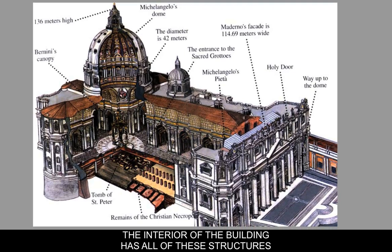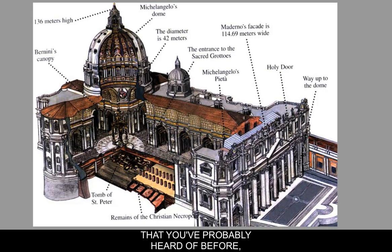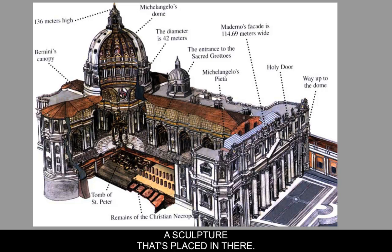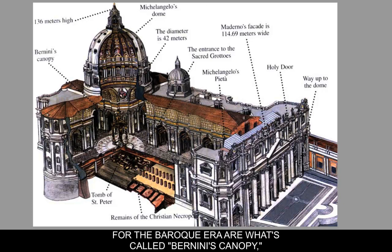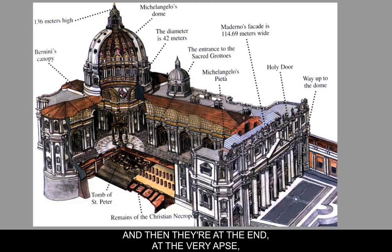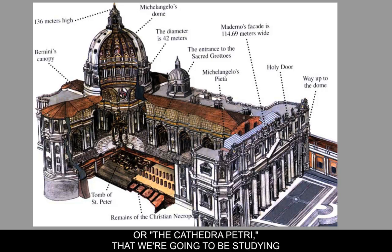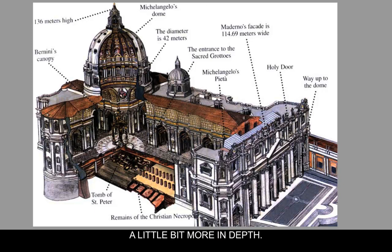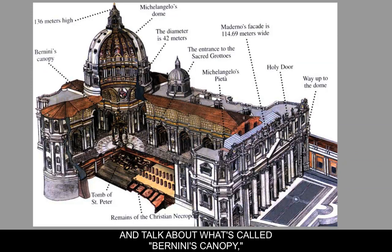The interior of the building contains structures like Michelangelo's Pietà. But the things most important for the Baroque era are what's called Bernini's Canopy, also referred to as the Baldacchino, and at the very apse at the end is something called the Chair of St. Peter's — the Cathedra Patri — which we'll study more in depth. The Baldacchino is built in the center right underneath the dome, in the crossing of the church, over the remains of St. Peter.